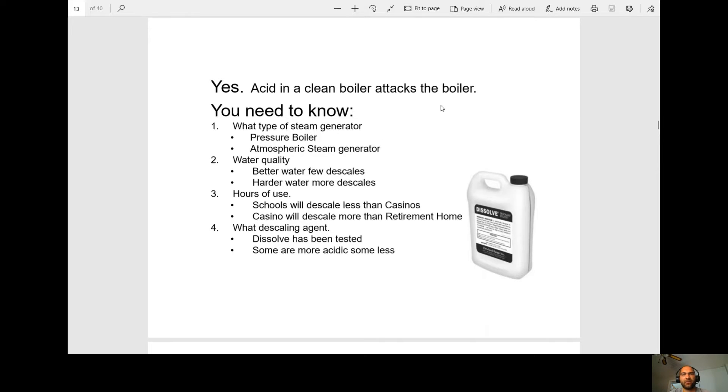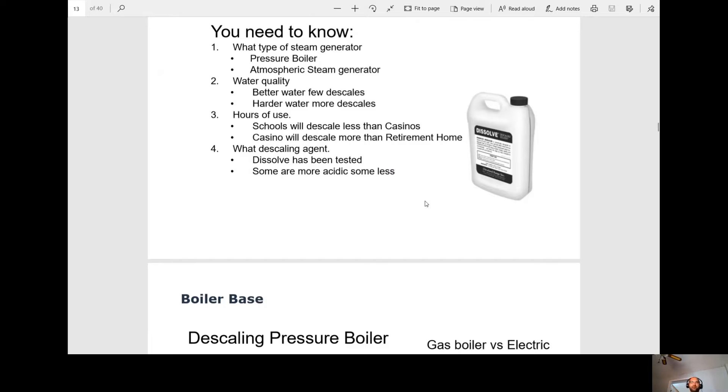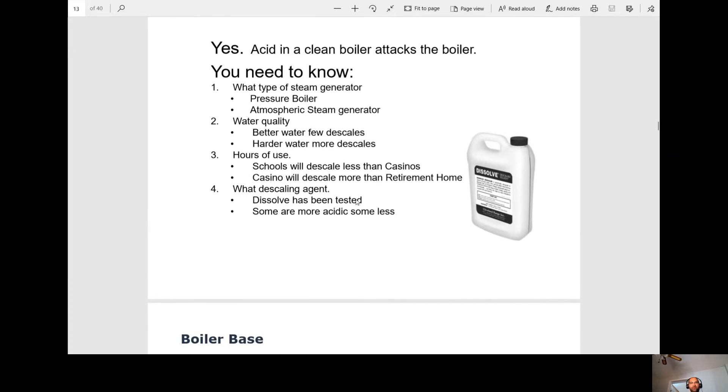So acid in a clean boiler attacks the boiler. What type of steam generators are there? There's two types, the pressure boiler and the atmospheric one. So water quality: better water means you have to descale it less often, so that's your filtration system. And the harder the water is, the more often you're going to have to descale. Hours of use: so obviously somewhere like a school, it's not being used as often, it will not have to be descaled as often. And what type of descaling agent should you use? You should be using the Dissolve. Some are more acidic, some less. That's obviously important because we don't want the acid to attack the boiler walls. So we want to make sure we use the proper product.